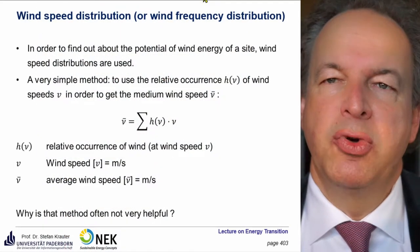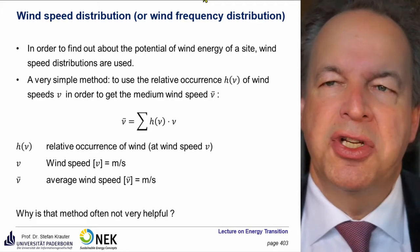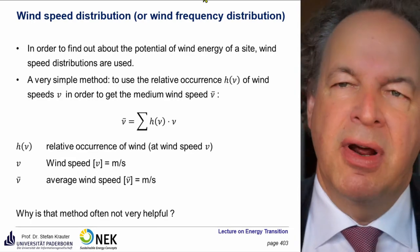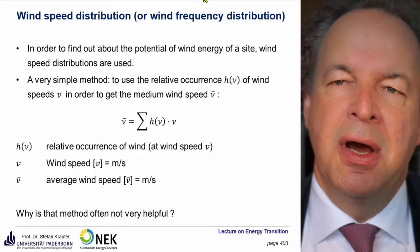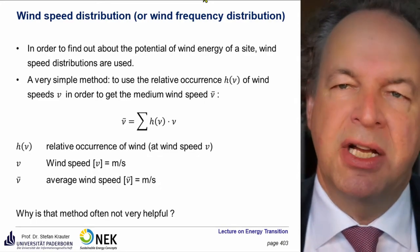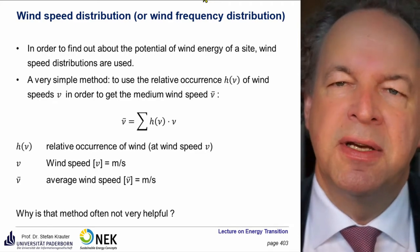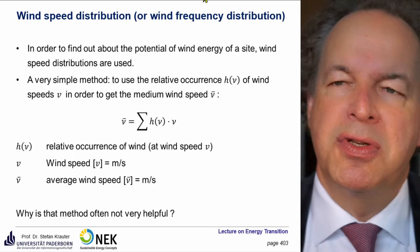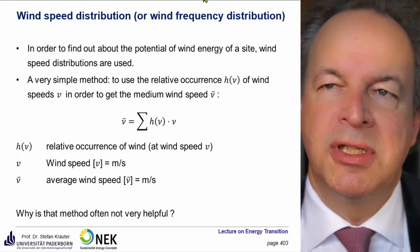Wind speed distribution or wind frequency distribution. We can start the same as for solar energy with average irradiance or average wind speed here. We have the relative occurrence h as a function of the wind speed v, multiplied by the actual wind speed added up, giving us the mean wind speed. The question is why that method is not very helpful for wind speed. As we know, it can be applied for solar power, but for wind it is less preferable. We will discuss this in the upcoming lecture.